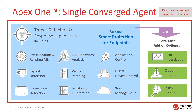In Apex One, you have a single converged agent. It includes the typical signature-based malware detection, the new-age machine learning, behavioral analysis, and the ability to do isolation and quarantining, exploit prevention, and application control — all built into the single converged agent. You can additionally add on EDR investigation, our cloud sandbox ability, or our MDR service.